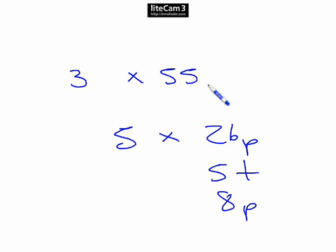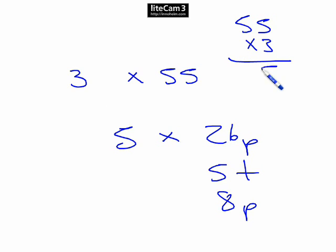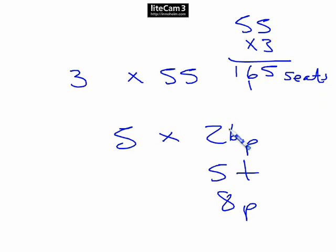We've got a lot of figures here, but it's not that complicated. Three coaches with 55 seats each gives us 165 seats in total. We've got 5 classes of 26 pupils, so we need to work that out: 26 times 5.